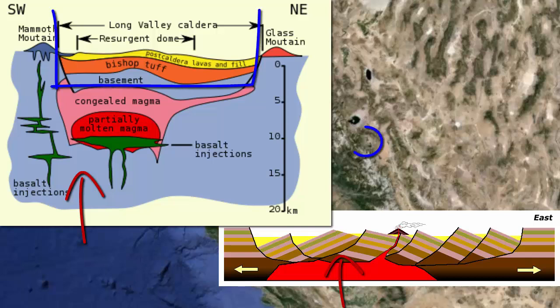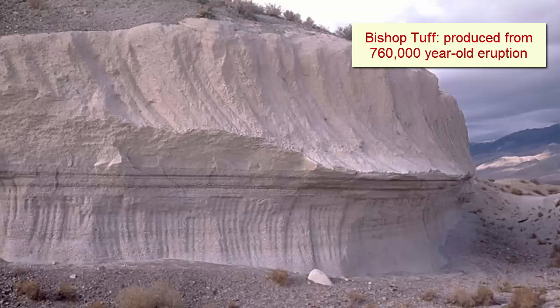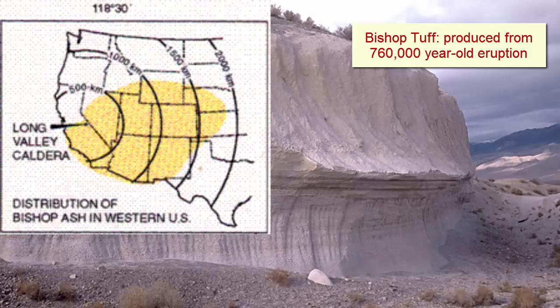The Long Valley caldera is a giant crater left behind after one of the largest volcanic eruptions in North America emptied the magma chamber and the surrounding crust collapsed. The last large eruption, about 760,000 years ago, left bits of ash and pumice strewn across most of the western United States.